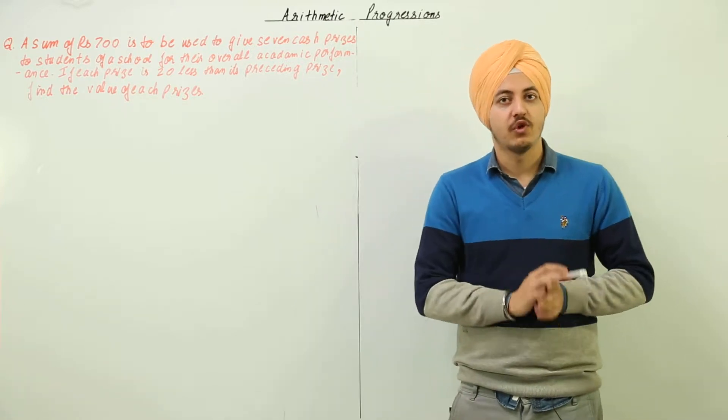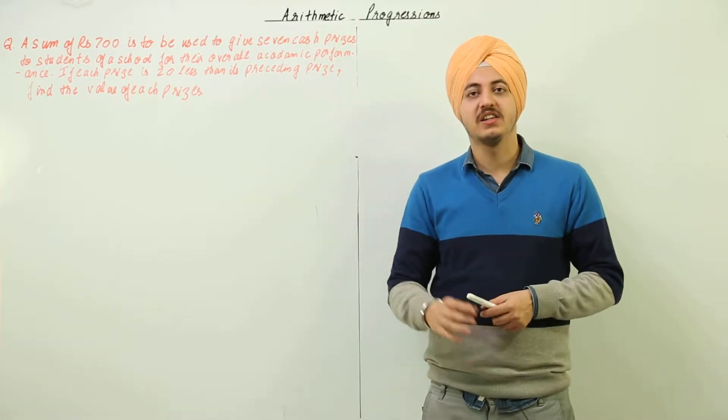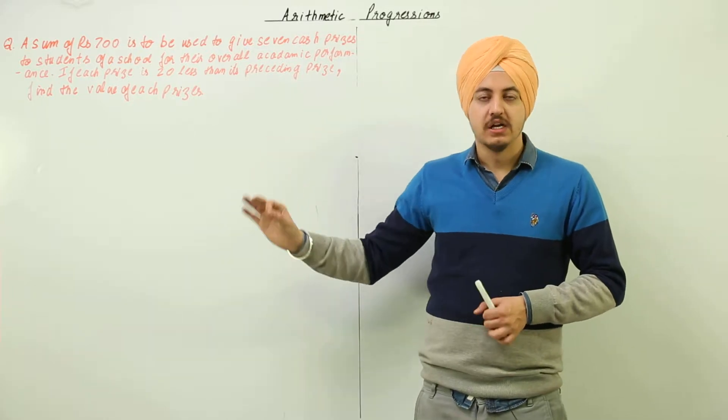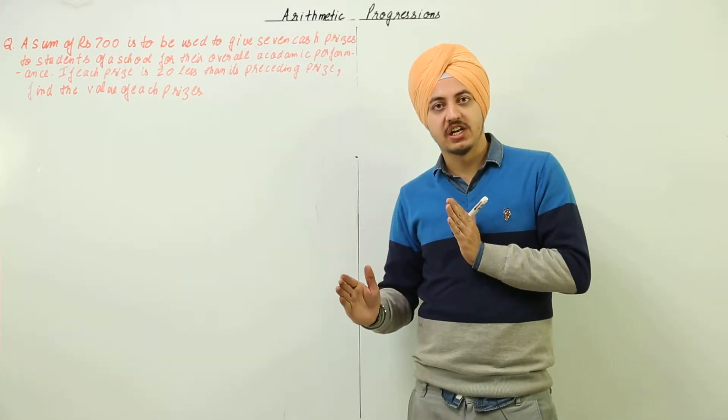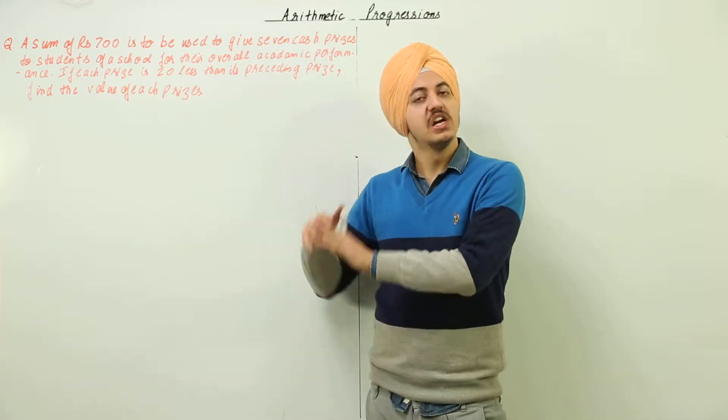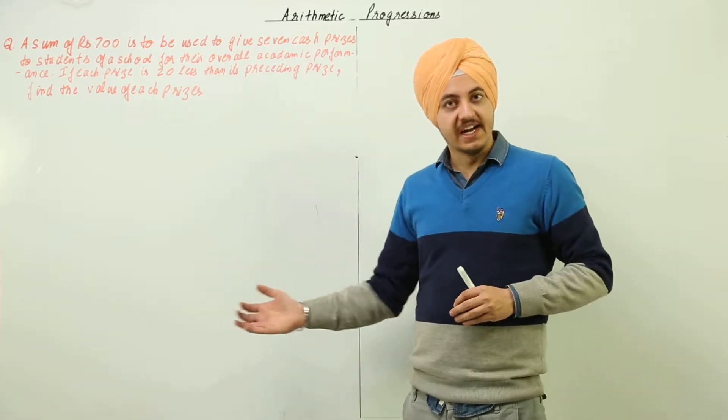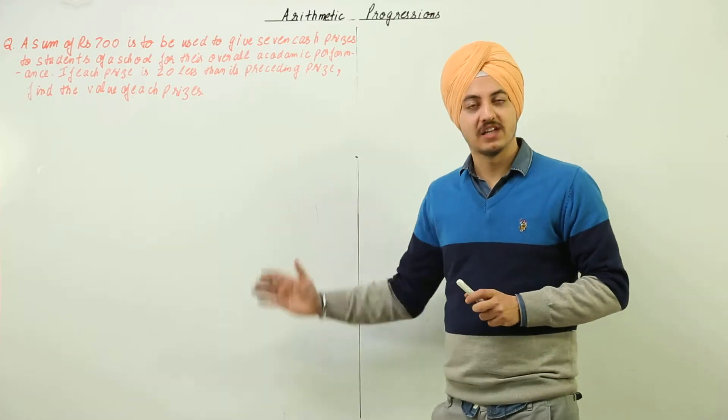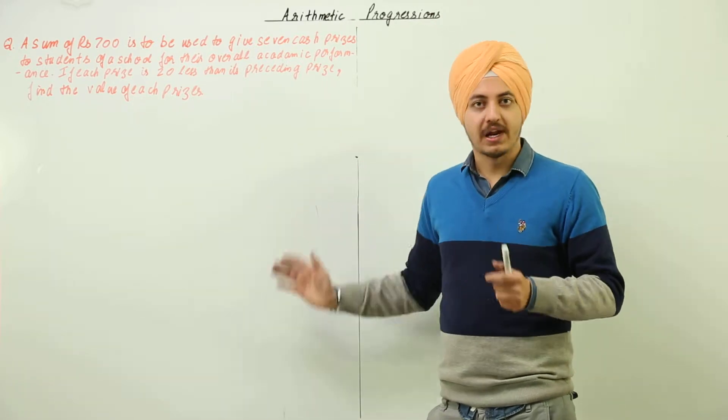If we let the maximum price be a, the next price is a minus 20, the next price is a minus 40, the next price is a minus 60, next price is a minus 80 and so on. 7 prices are there and we need to calculate each and every price.